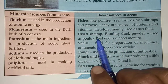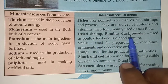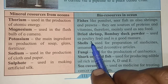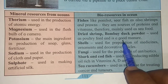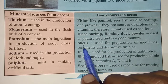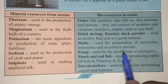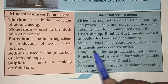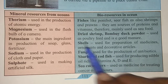We also get dried shrimp and Bombay duck powder — these are used as poultry feed and are good manure. Next, shells — used for preparation of medicines, ornaments, and decorative articles for home decoration. Fungi found on the seabed is used for the production of antibiotics — to control many diseases, antibiotics are used, and fungi helps in making them.